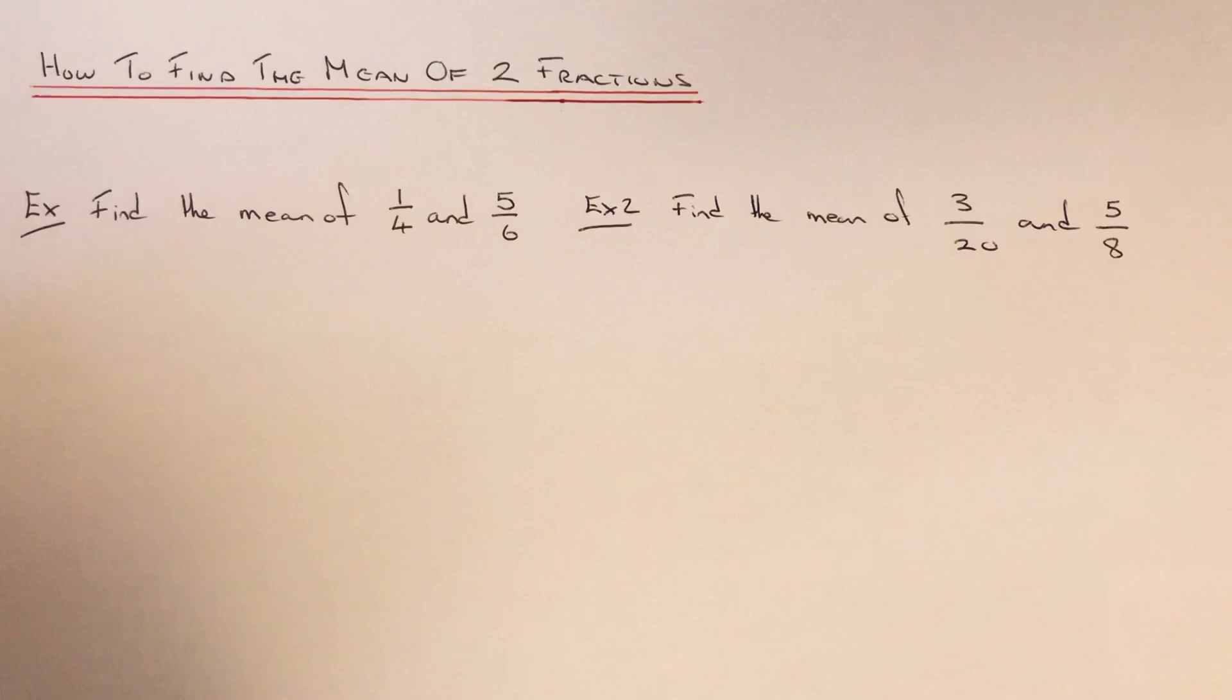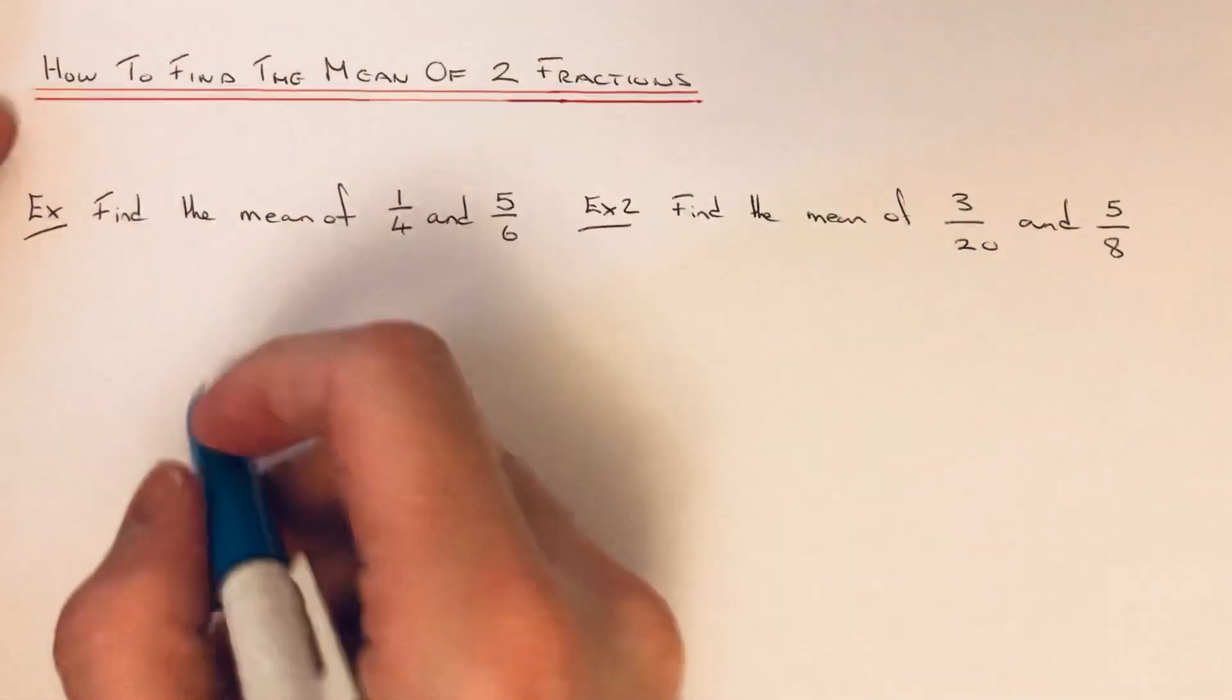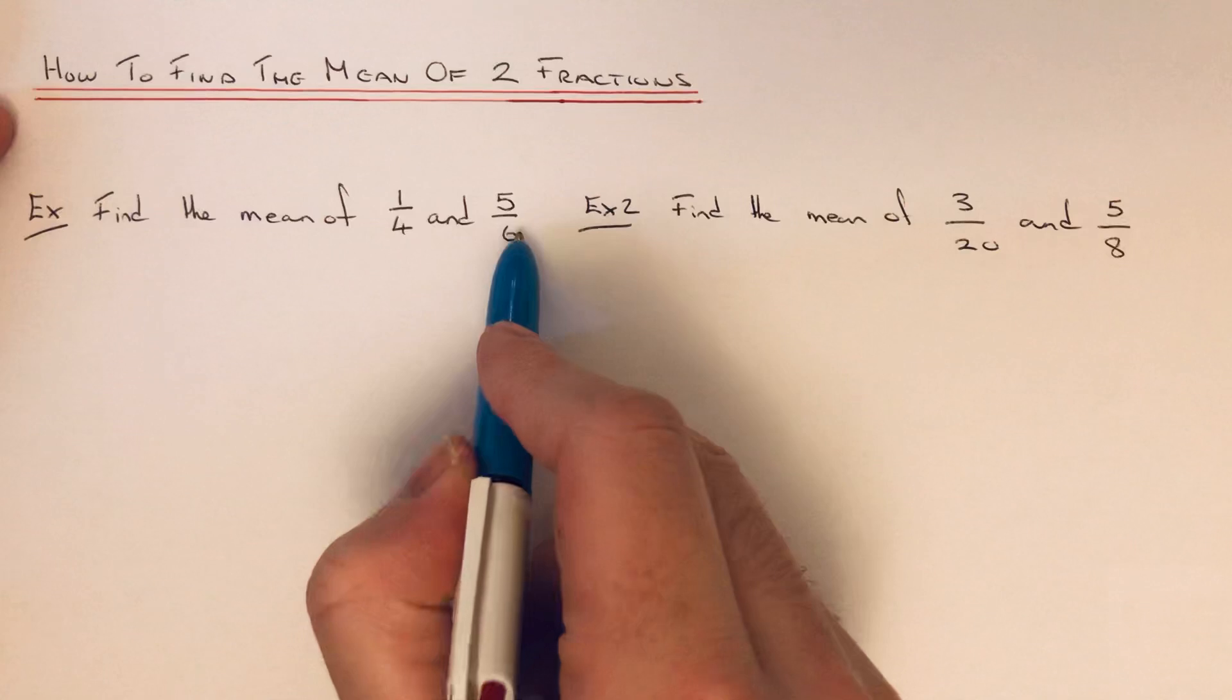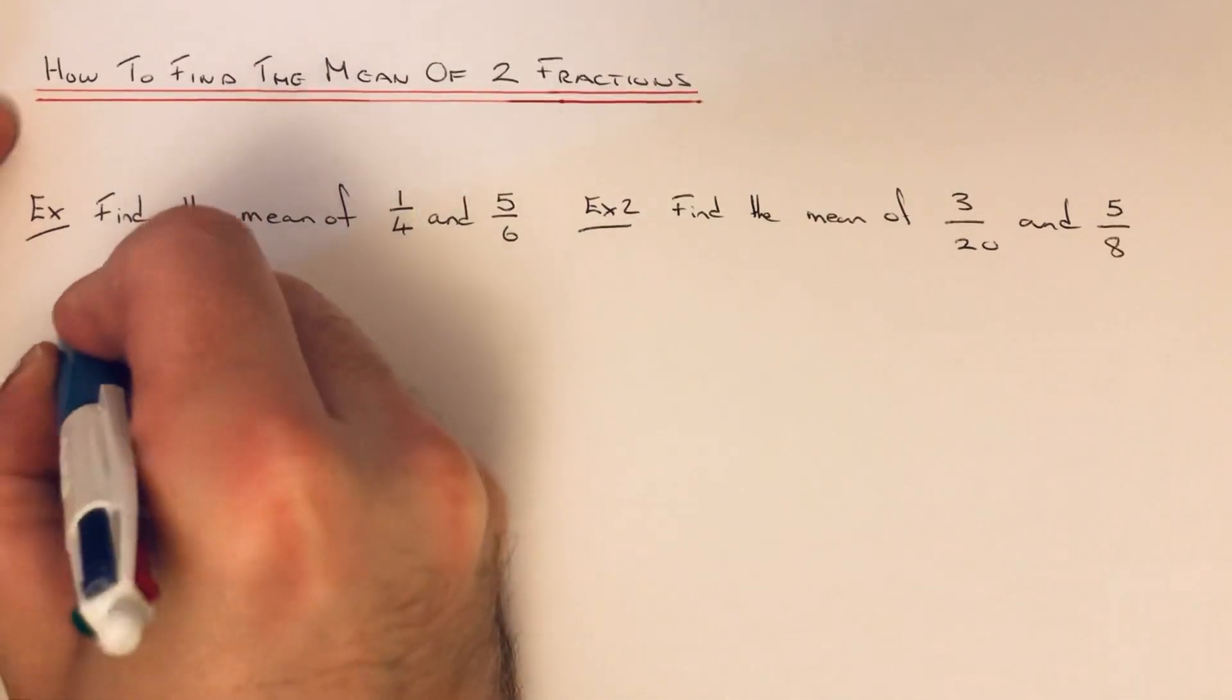So you need to know how to work out the mean. The mean is add all the numbers up and divide by how many numbers you've got. So if you've got two fractions, we need to add the two fractions up and then divide the answer by two. So let me show you how to do this then on two examples.